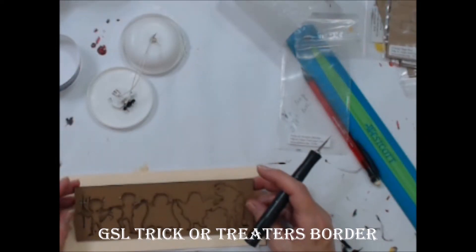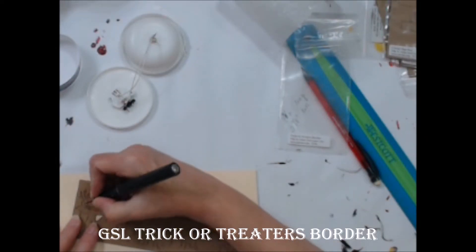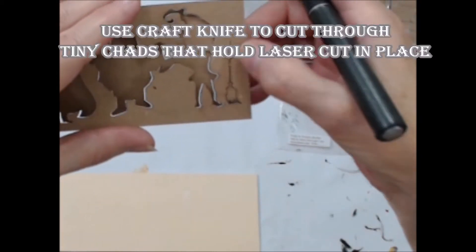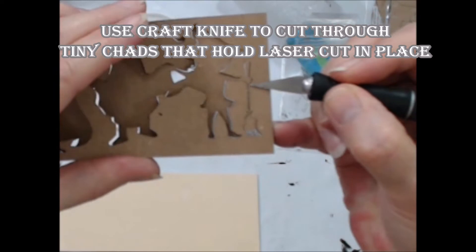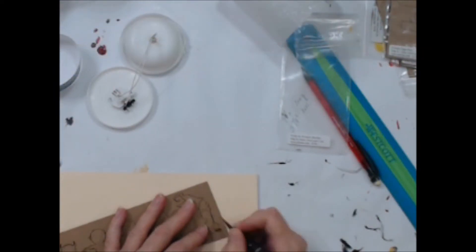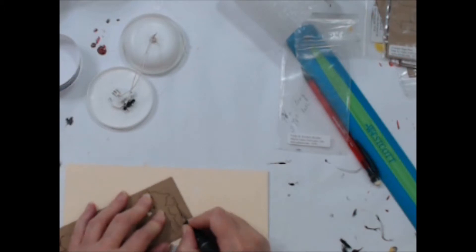I chose this cute trick-or-treaters border piece from Gypsy Soul to use for my first candle. Use a craft knife to cut through the little chad pieces holding the laser cut border to the rest of the chipboard. Once you cut through, the piece will fall out easily.